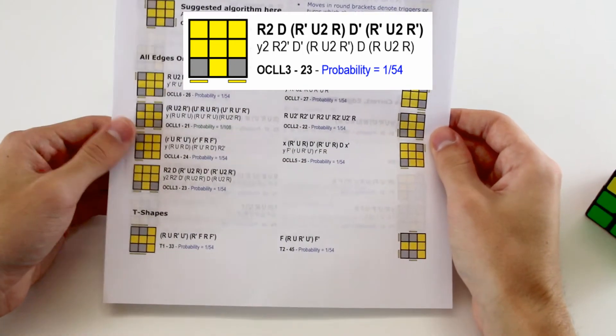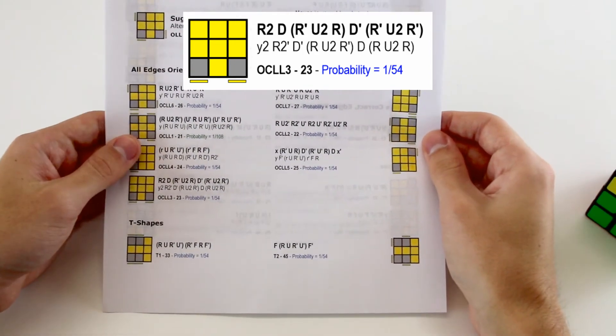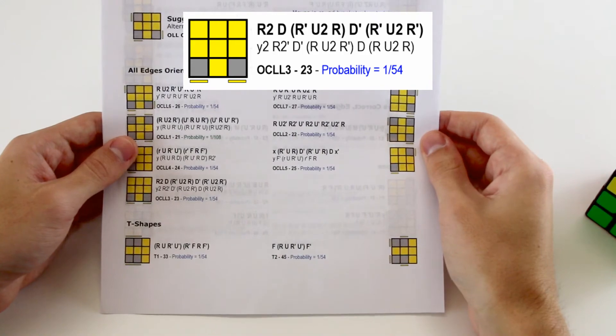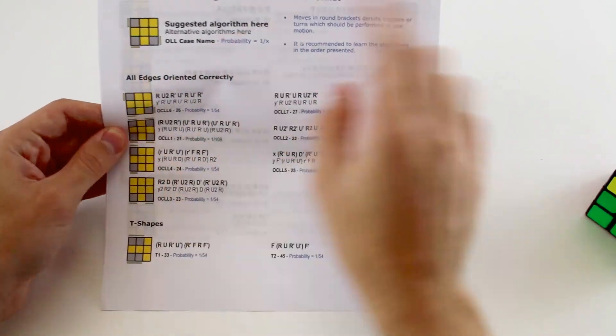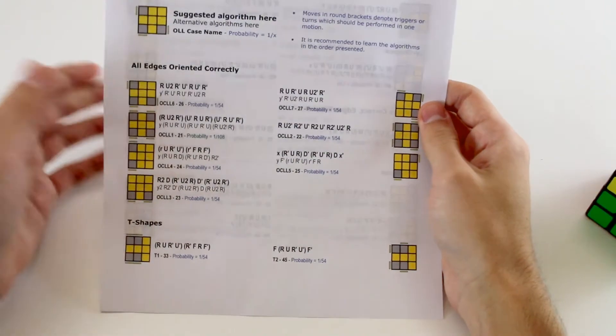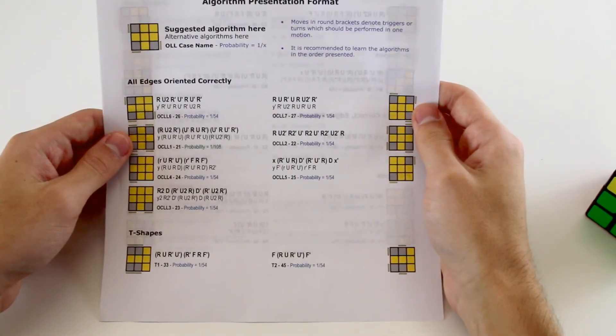And again, like the PLLs, we've broken these algorithms up into many groups which are segmented by how they look. For example, this first group, which is titled All Edges Oriented Correctly, are the algorithms where you've already oriented the edges of your last layer.